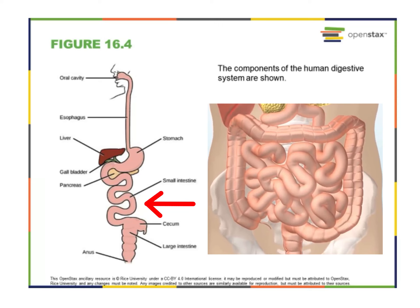Chyme is mixed with pancreatic juices, which is an alkaline solution rich in bicarbonate that neutralizes the acidity of the chyme from the stomach. Remember, the stomach needed a lot of mucus to protect itself — well, now that acidity has been neutralized. Pancreatic juices also contain digestive enzymes that break down starches, disaccharides, proteins, and fats — think about how those relate to the macromolecules we discussed early in the semester.